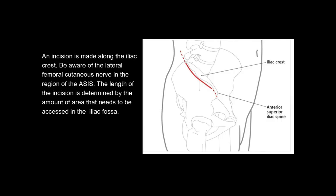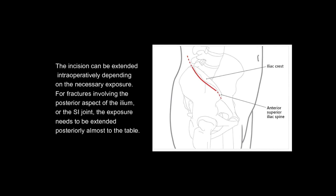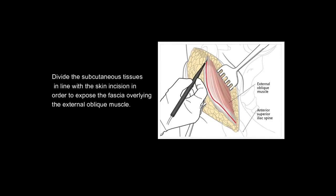An incision is made along the iliac crest. Be aware of the lateral femoral cutaneous nerve in the region of the ASIS. The length of the incision is determined by the amount of area that needs to be accessed in the iliac fossa, and can be extended intraoperatively depending on the necessary exposure. For fractures involving the posterior aspect of the ilium or the SI joint, the exposure needs to be extended posteriorly almost to the table. Divide the subcutaneous tissues in line with the skin incision to expose the fascia overlying the external oblique muscle.